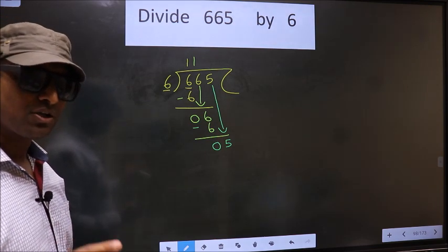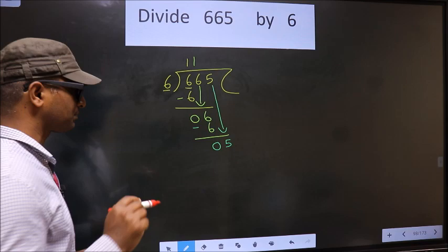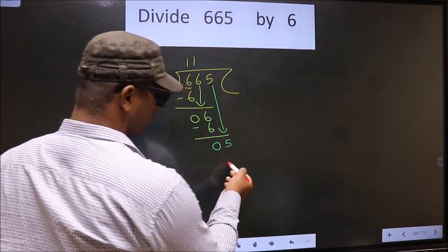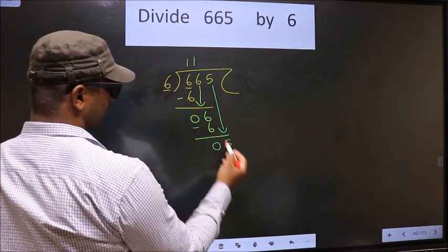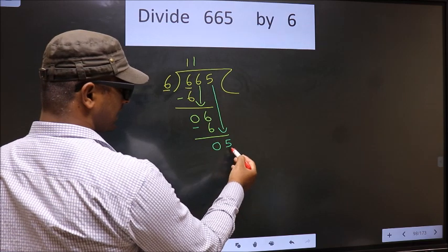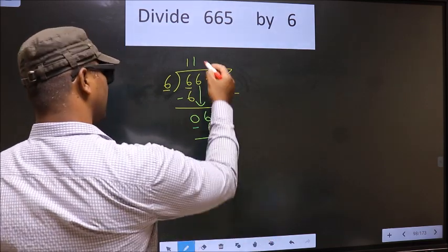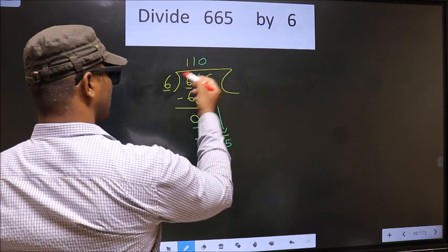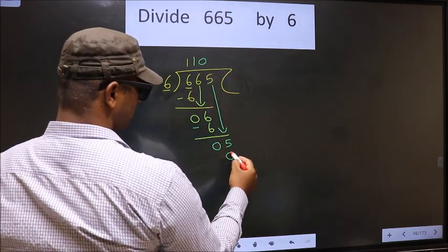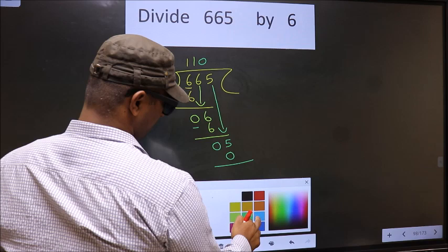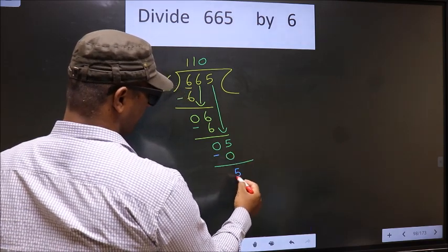Instead, what you should think of is, what number should we write here? 6 here. If we write 6 here, that is larger than 5. So what we do is take 0 here. So 6 into 0 is 0. Now you subtract: 5 minus 0 is 5.